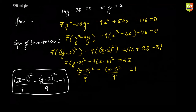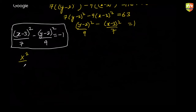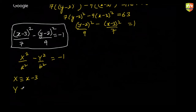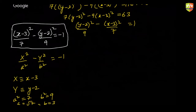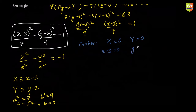Comparing with the standard form, the role of X is played by (x − 3) and Y by (y − 2). For the center, X = 0 and Y = 0 means x − 3 = 0 and y − 2 = 0, giving center (3, 2).